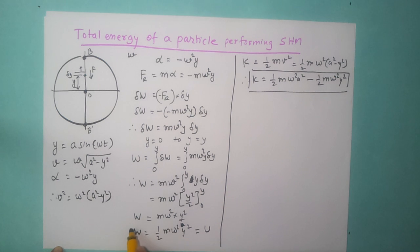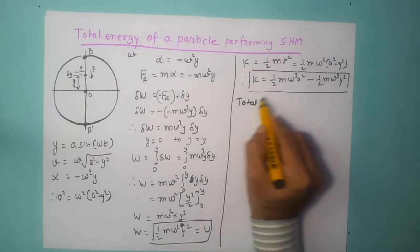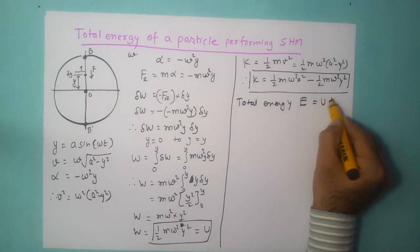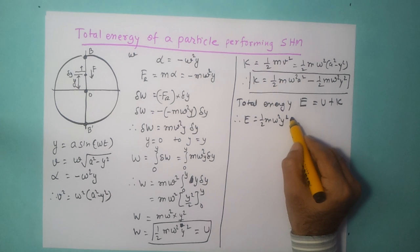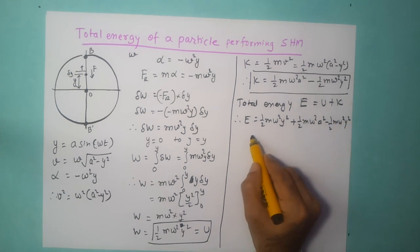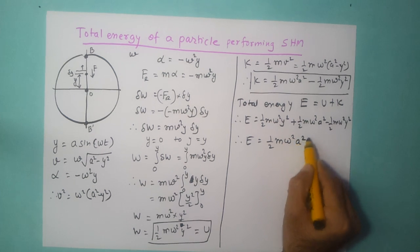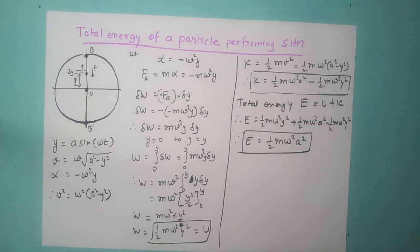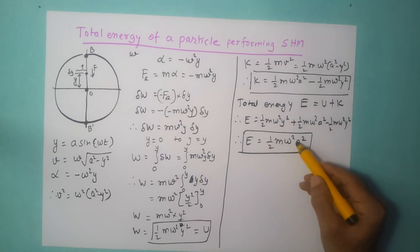The total mechanical energy E is the sum of kinetic and potential energy: E equals u plus k. So E equals half m omega squared y squared plus half m omega squared a squared minus half m omega squared y squared. The y squared terms cancel out, giving E equals half m omega squared a squared. This is the total energy of the particle at any given point in time — note that y is replaced by a, confirming total energy is constant.